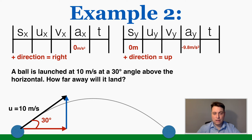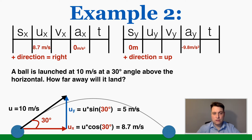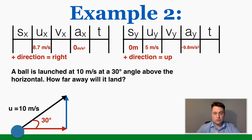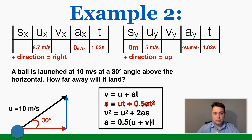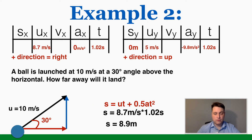Solving for initial velocities using trig: the x-component is 8.7 m/s and the y-component is 5 m/s upward (positive). To find how far away it lands, I need the x displacement. Just like before, I don't have enough x variables, so I solve for time using the y-axis table. With displacement, initial velocity, and acceleration known, using the second kinematic equation gives t = 1.02 seconds. Since time is the same in both axes, I use that in the x table and solve for displacement, getting 8.9 meters.